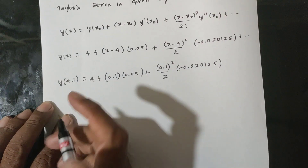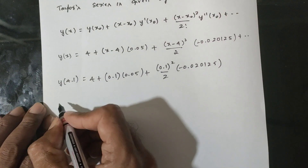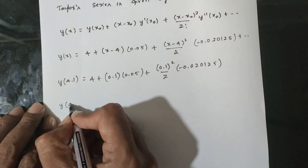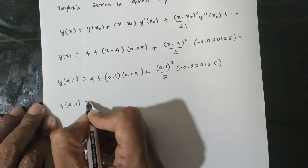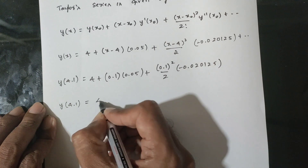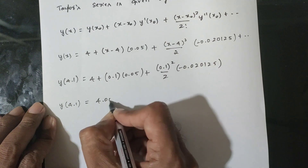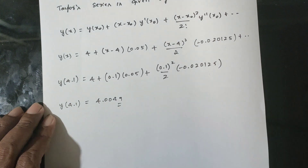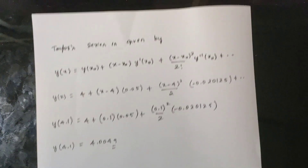Computing the final answer: y(4.1) is approximately 4.0049.